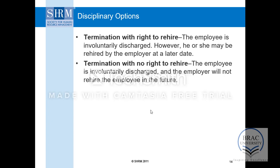If the employee's performance still doesn't improve, the organization may need to discharge or terminate the employee. During termination, there are two options: termination with the right to rehire, meaning the employee might be considered for hiring again, or termination with no right to rehire, which applies in very severe situations where the employee's offense is particularly serious.